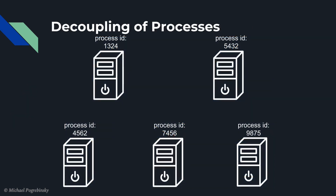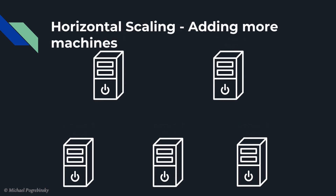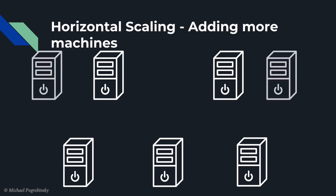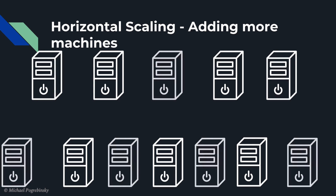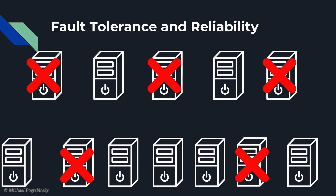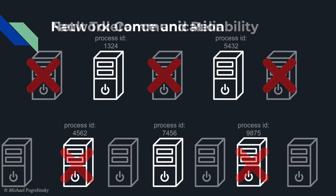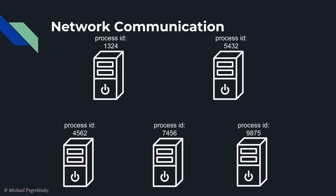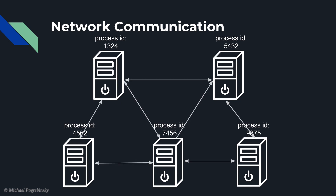So if we put each process on a separate machine, those processes are completely decoupled from each other. They can scale horizontally as much as needed, meaning we can keep adding more and more machines as we need to extend our memory or processing power. And if some machines become unavailable or break down, other processes keep functioning and overall our system can stay available and continue performing its tasks. That is actually not trivial to achieve, but we will learn how to build such algorithms in the following lectures. Also, the decoupling of the processes and placing them on different machines leaves us with the network as the only option for communication between the processes.